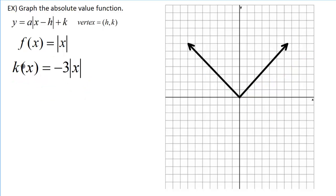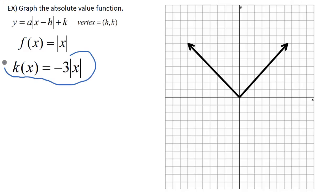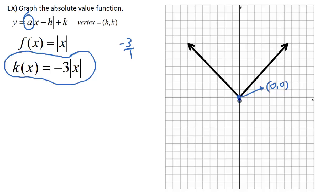Now we've got k of x equals negative three times the absolute value of x — we'll do this one in blue. Same as before, nothing is added or subtracted inside or outside the absolute value bars, so the vertex stays at (0, 0). Here a represents our slope, so our slope is negative three, written as negative three over one. Going to the right from the vertex, we go down three over one each time. Connecting those points gives us the line going to the right.